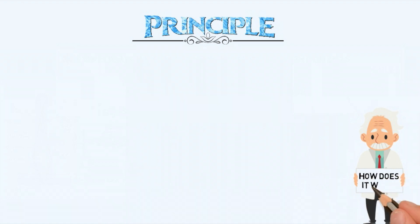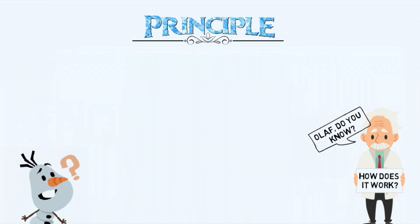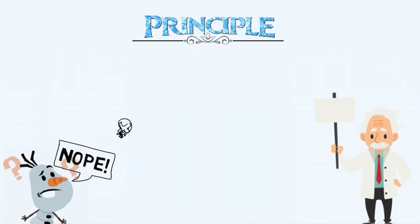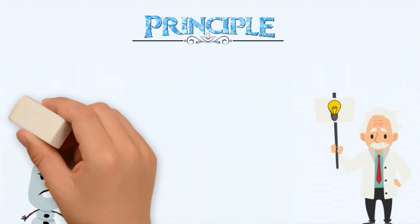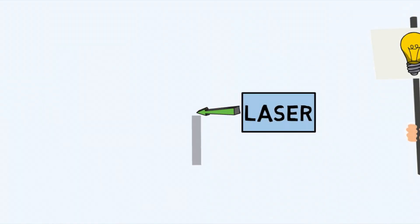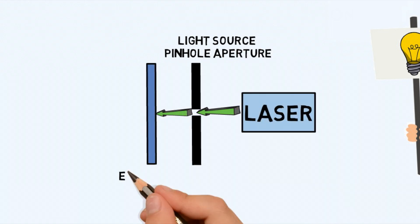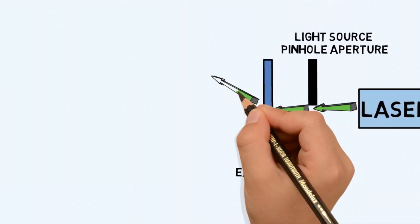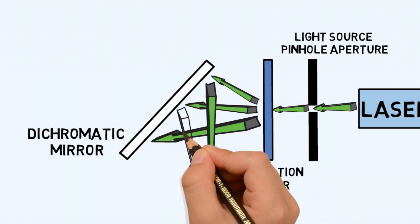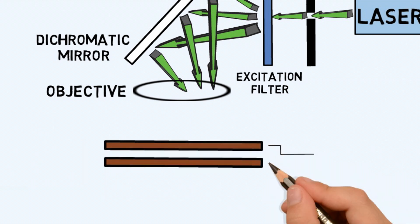What is the principle of operation of CFM? This technique works by allowing light from a laser to pass through a light source pinhole aperture that focuses the light beam on a specific portion of the sample, and through the excitation filter, the excitation light rays reflect off the dichromatic beam splitter mirror through the objective lens onto the specimen.